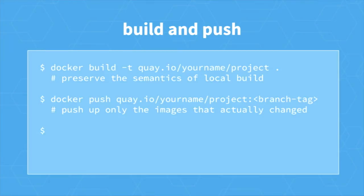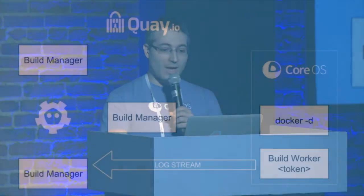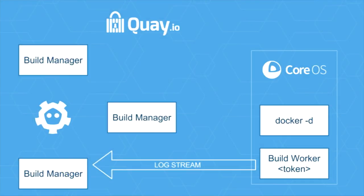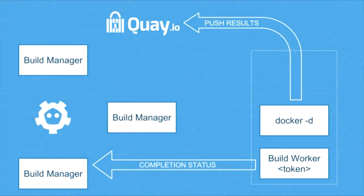This doesn't get us any information about how the build is occurring in real time. To do that, we stream logs out of Docker via the socket and send those to the build manager, which then semantically processes and aggregates them. We have these logs go over the pub/sub channel to the build manager for security reasons, so there's no direct communication between the build worker and any of the rest of our infrastructure — the build manager is solely in charge. Once the build is finished, we push the results directly to Quay using an access token, and then write the completion status over the same pub/sub channel.